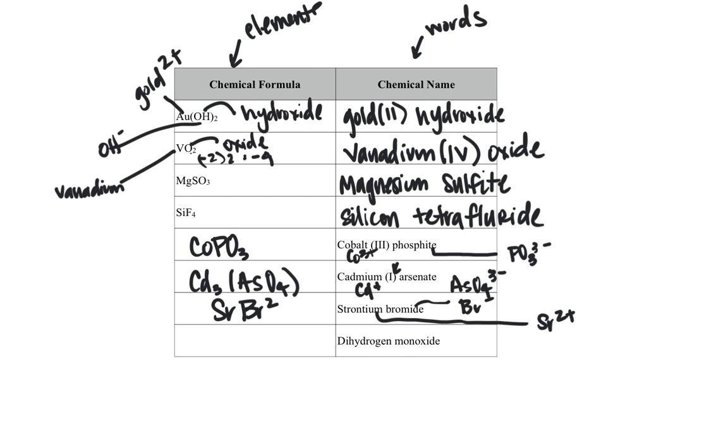And then the last one, dihydrogen monoxide. This means you have one O and two hydrogen, and so you would write that H2O. We tend to call this water.